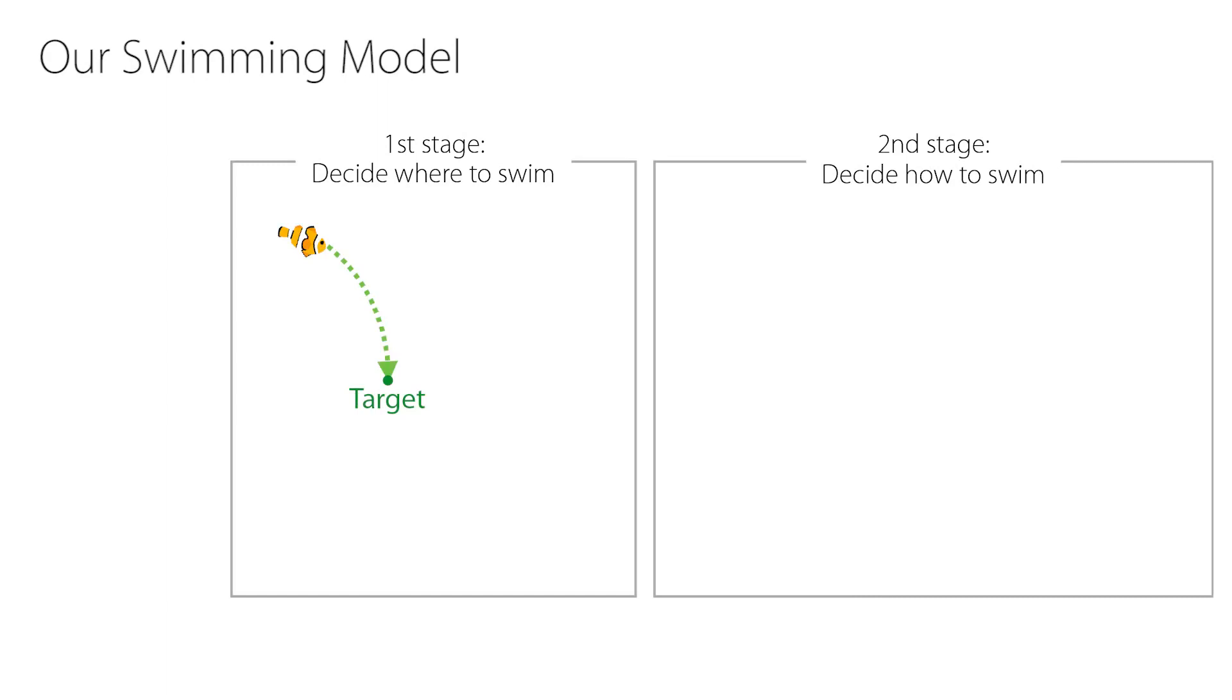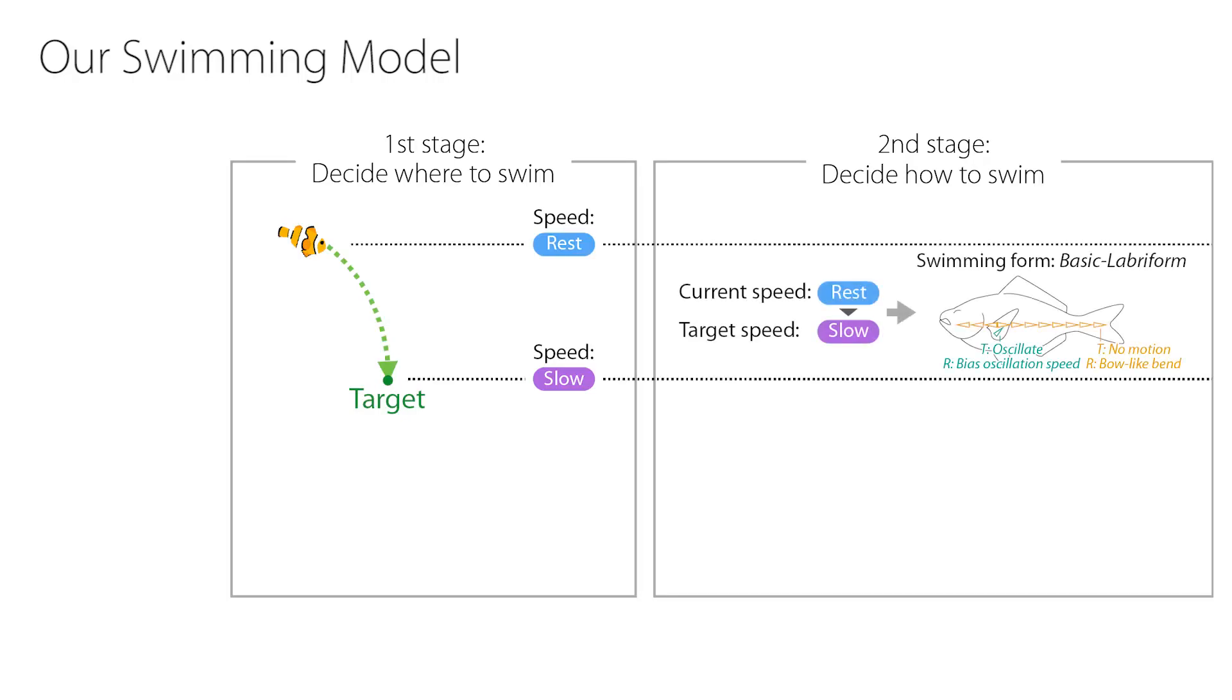Once the virtual fish decides its target position and target speed, it can understand the speed transition qualitatively. Next, it decides the swimming form using this information.